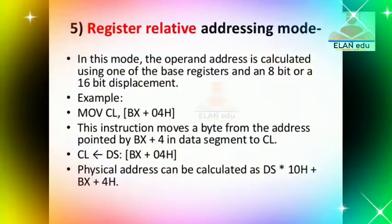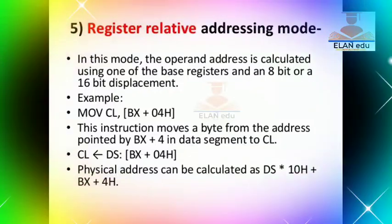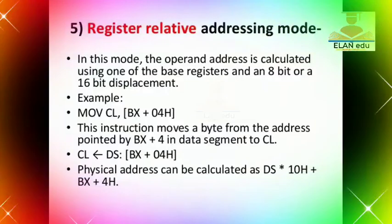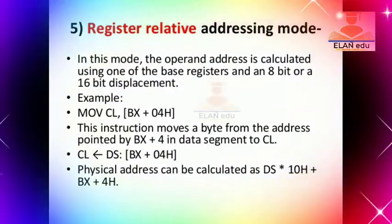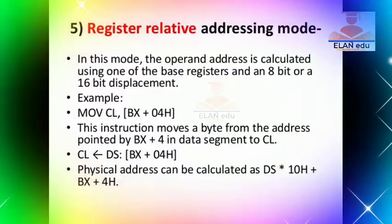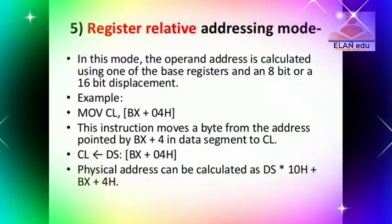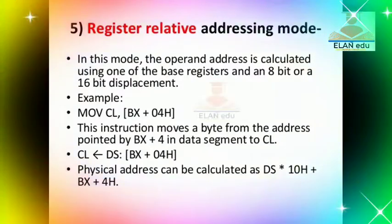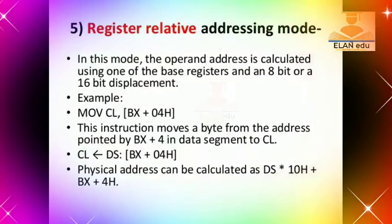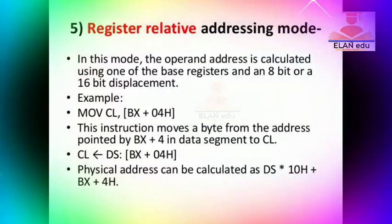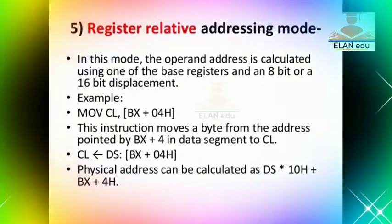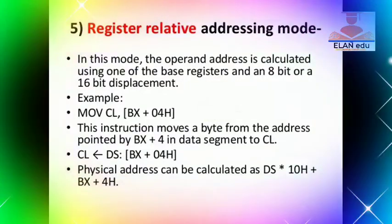In the based addressing mode, we have a base register and a displacement value. For example, we have a BX value added to a displacement of 4. We use 8-bit data and perform the physical address calculation using the original addressing mode.